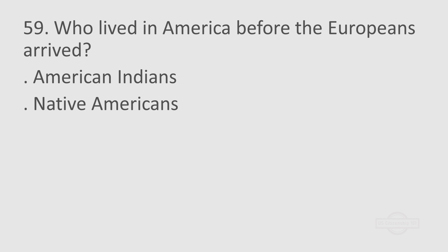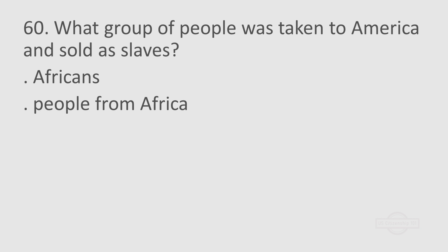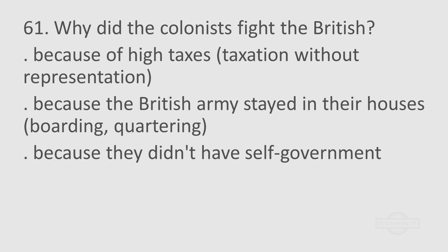Question 59: Who lived in America before the Europeans arrived? American Indians. Native Americans. Question 60: What group of people was taken to America and sold as slaves? Africans. People from Africa. Question 61: Why did the colonists fight the British? Because of high taxes. Taxation without representation. Because the British army stayed in their houses — boarding, quartering. Because they didn't have self-government.